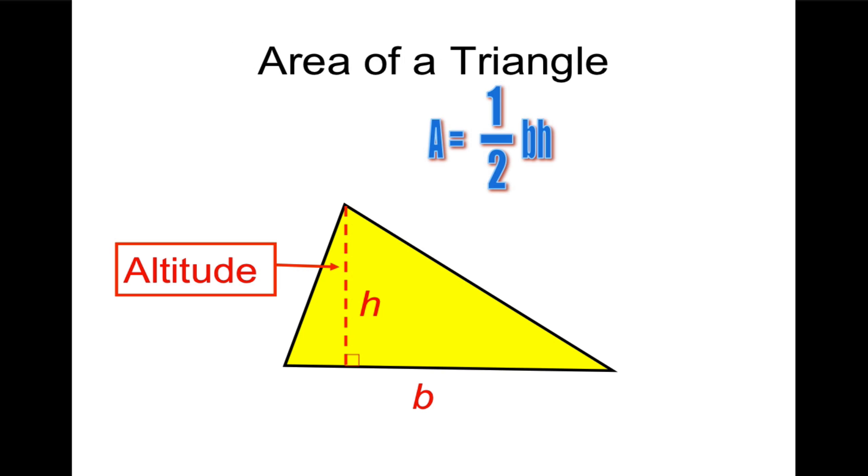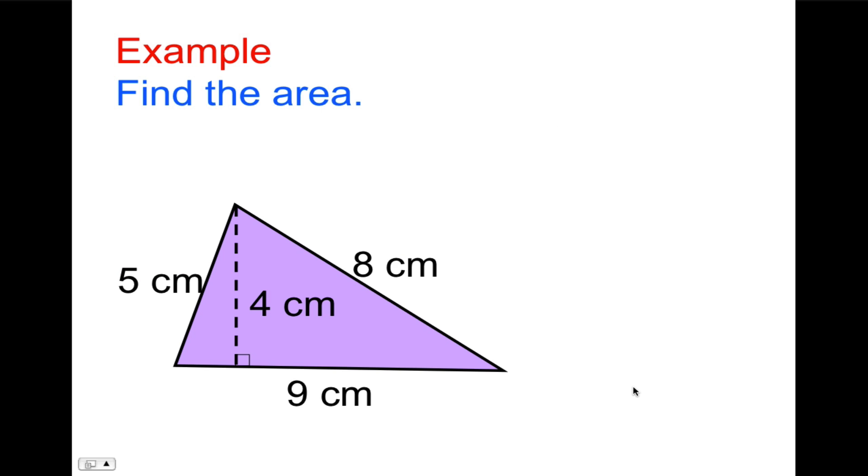The area of a triangle equals one-half the base times the height. Sometimes in the lower grades, they teach base times height divided by two. Well, this has the same effect mathematically. Taking half of it is the same as dividing it by two. Let's do a few examples. You're going to calculate the area of this triangle. So pause the video with the spacebar, try to figure it out, and then press the spacebar again to continue.